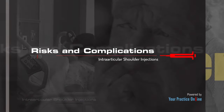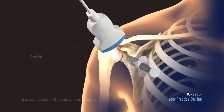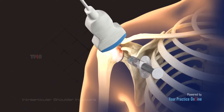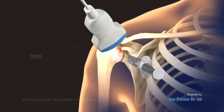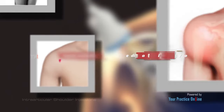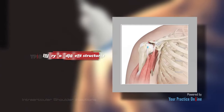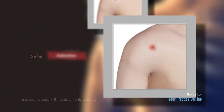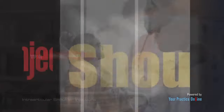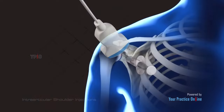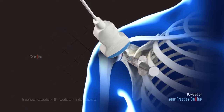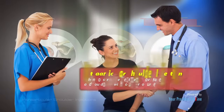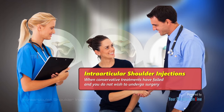Intra-articular shoulder injections are a relatively safe procedure. However, it may rarely be associated with certain risks and complications. The injection is particularly recommended for conditions such as arthritis, tendonitis, and bursitis when conservative treatments have failed and you do not wish to undergo surgery.